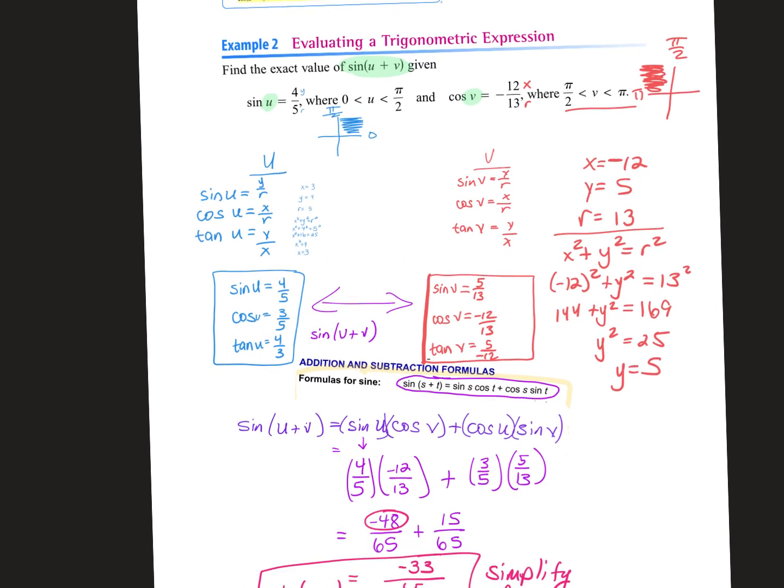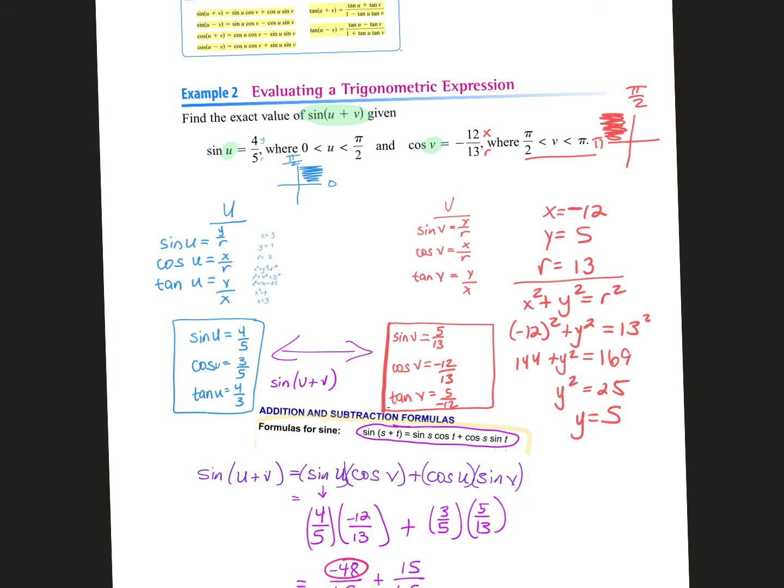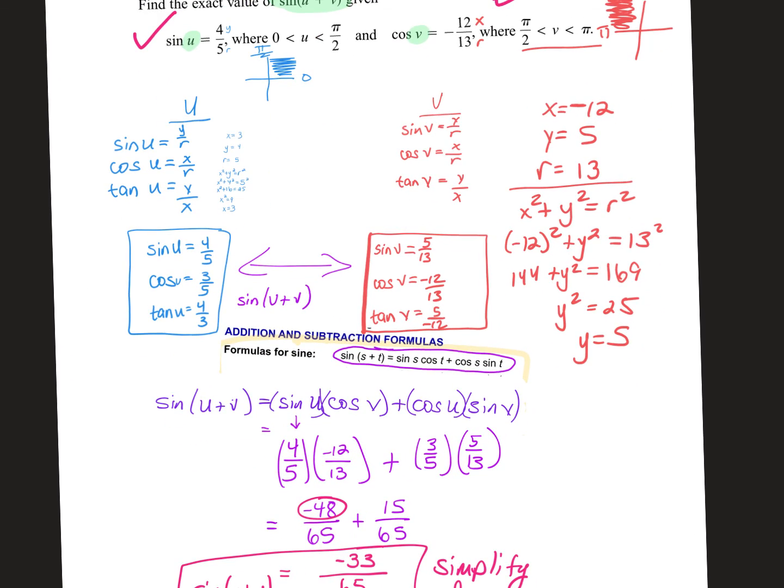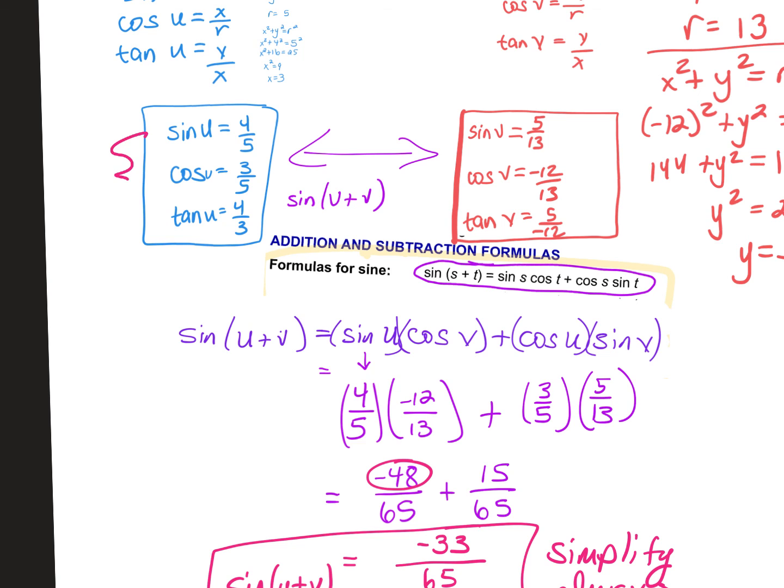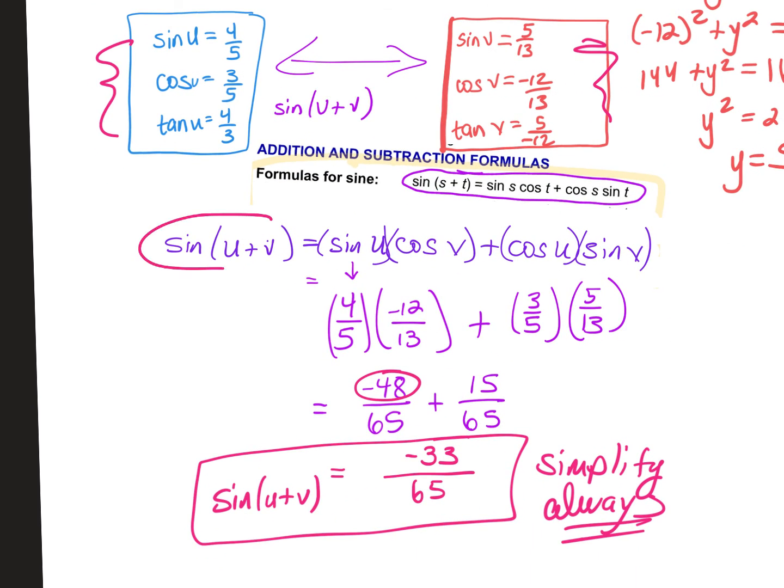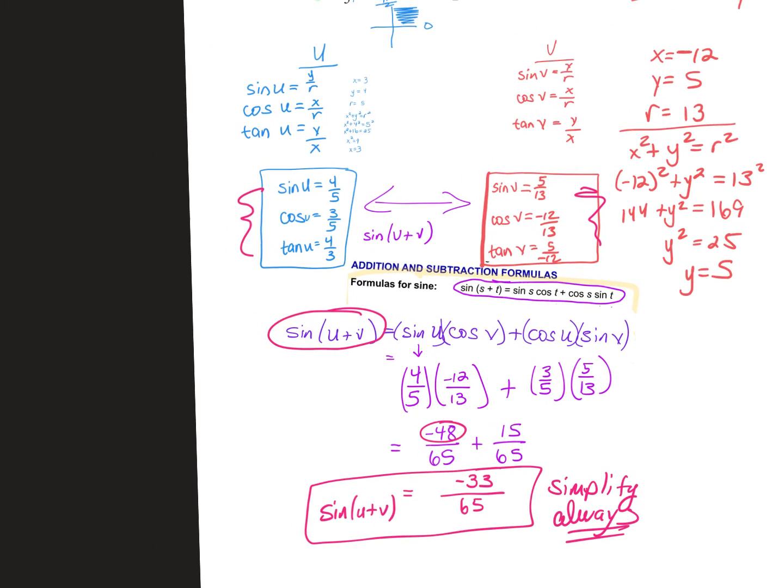So in a problem like this, they're not just telling you find the cosine of some degree angle. They're giving you two pieces of information, one about one triangle, one about another triangle. And all we did was go through, find X, Y, and R for both of them. Then we wrote down the three trig functions that we use in all of those formulas. We used the formula that they told us to. We substituted in all the values and we simplified the problem. There you go.